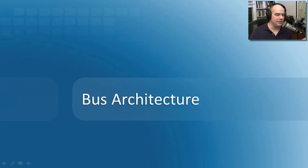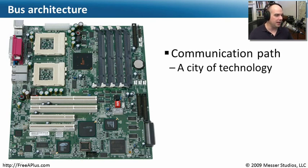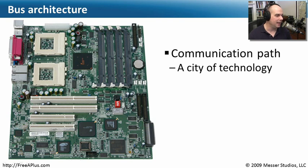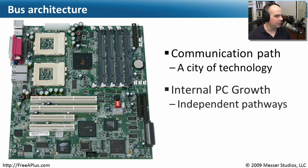Before we get into the specifics of what all those different bus architecture types are, let's take a step back and talk about why we even need a bus architecture in our computer to begin with. You've got this really city of technology here. If you look top down on a motherboard, it's almost like we're flying over in a plane. There are all kinds of different paths and connections between these components. You can see places for CPUs, the expansion bus itself where you plug in adapter cards. And if you look very closely at the motherboard, you'll see these little paths between all of these — and that's your bus. That's the way that these different devices communicate to each other.